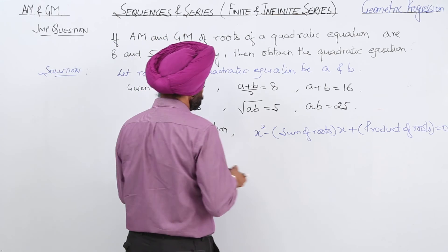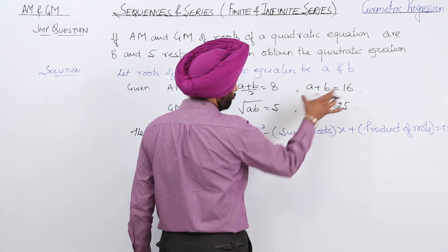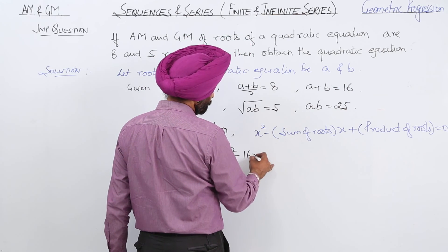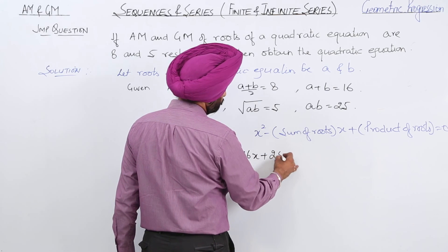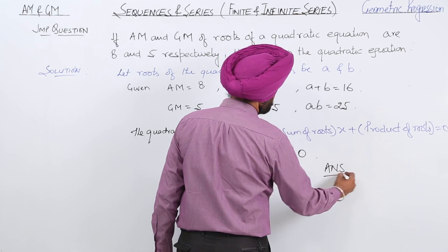So this becomes x² minus the sum of roots times x plus the product of roots, which gives us x² - 16x + 25 = 0. This is the answer.